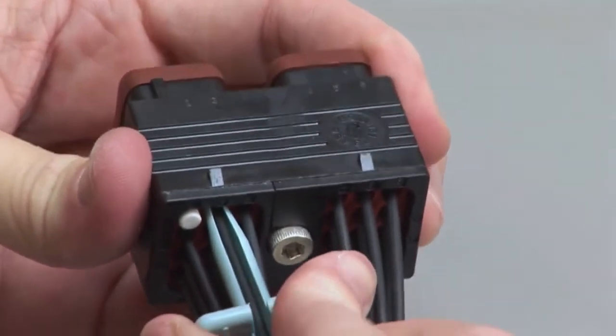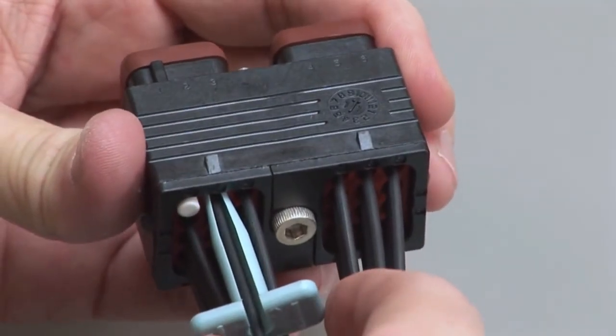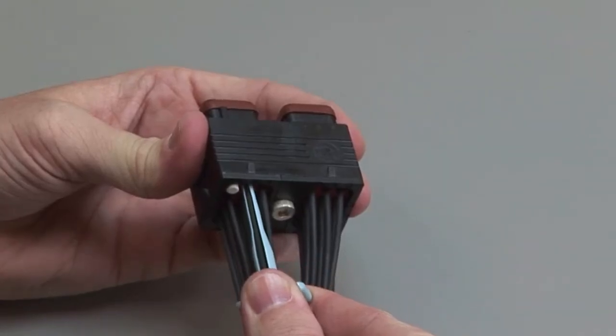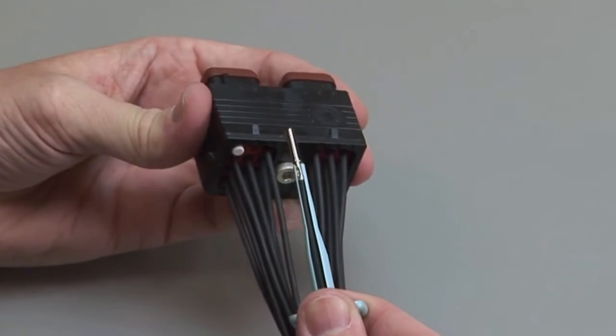Slide the tool along the wire into the cavity until it engages the contact and resistance is felt. Make sure you keep the tool straight and do not twist or angle the removal tool. Pull the contact and wire assembly out of the connector.